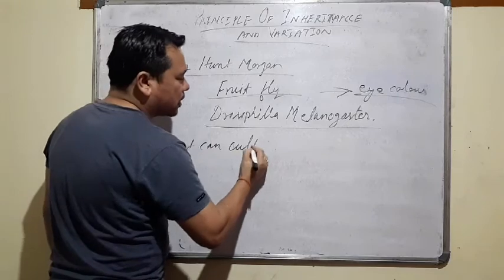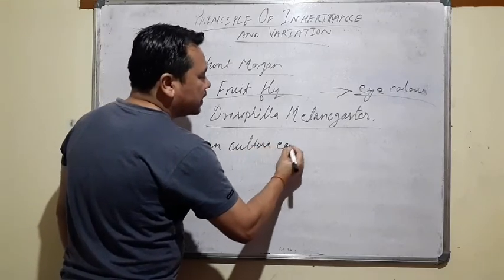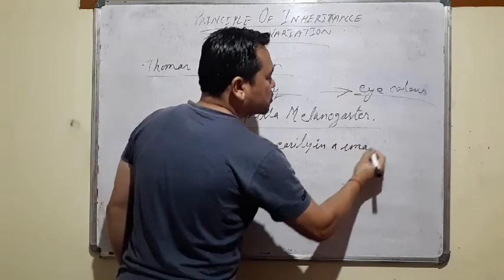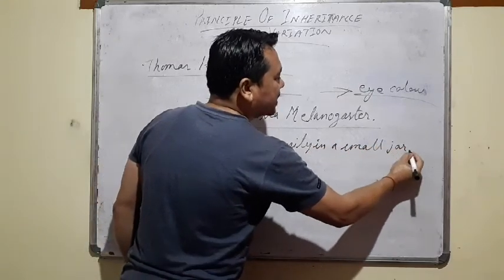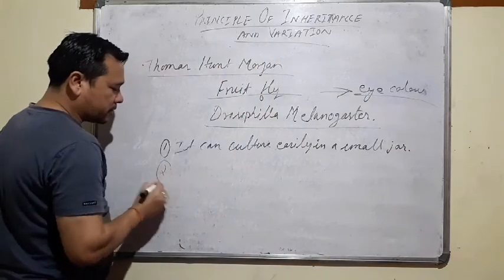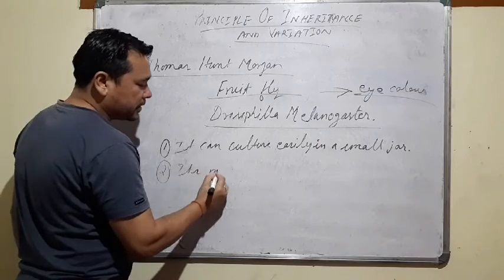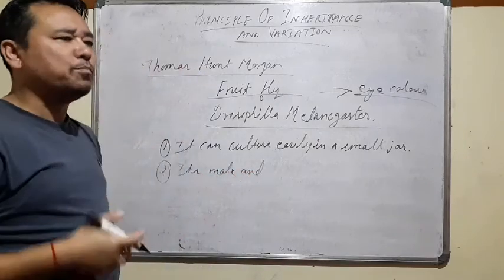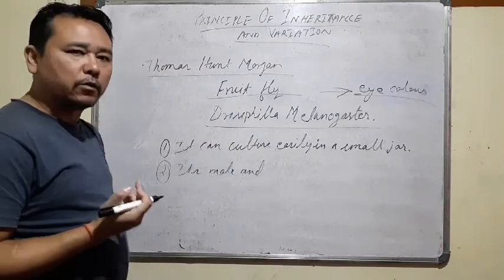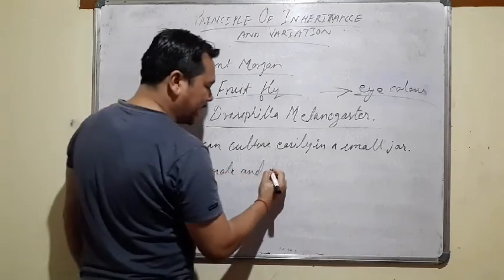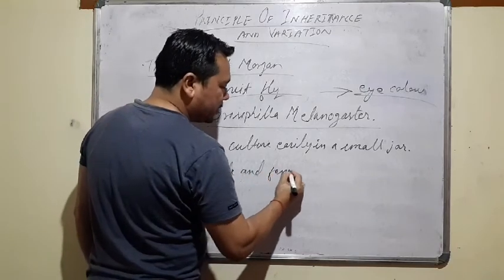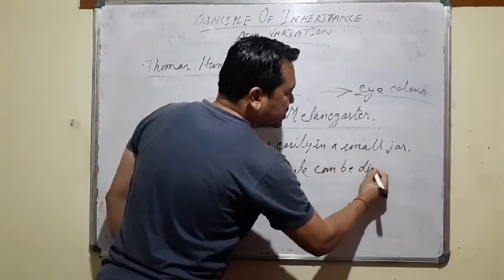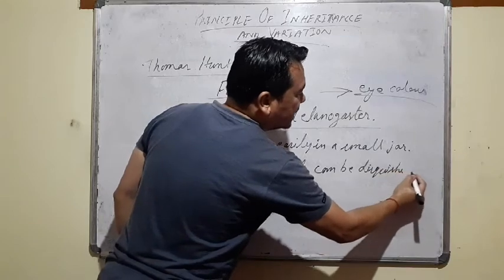First, Drosophila melanogaster can be cultured easily in a small jar. Its male and female can be distinguished easily.